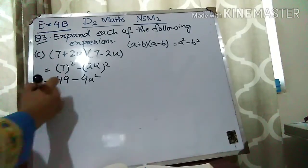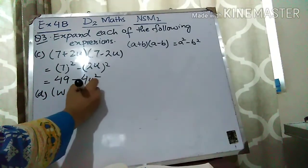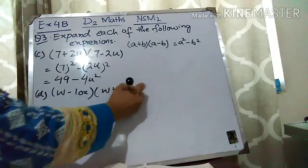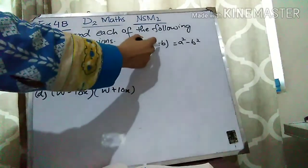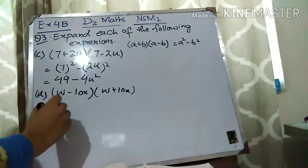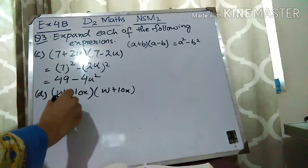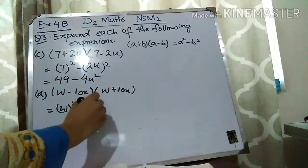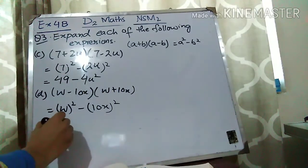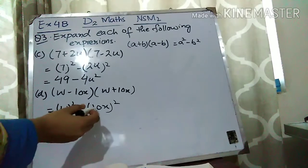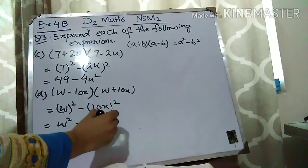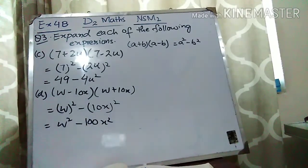Part D is (W minus 10X)(W plus 10X). A is W and B is 10X, so A minus B, A plus B equals A square minus B square: W square minus (10X) square. 10 square is 100, so the answer is W square minus 100X square.